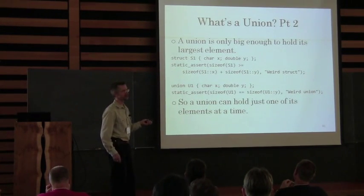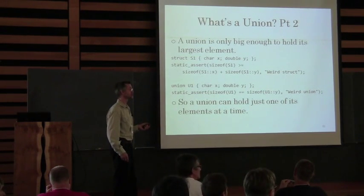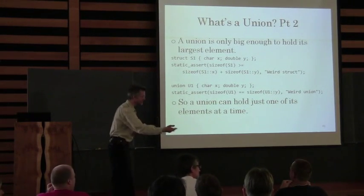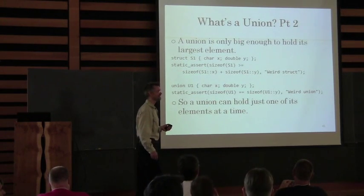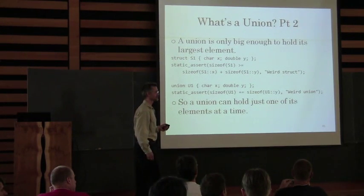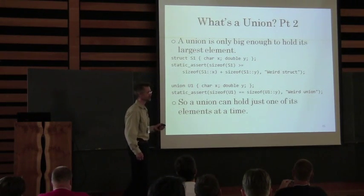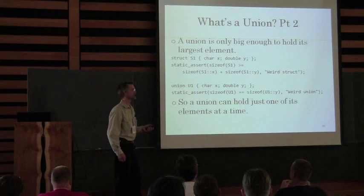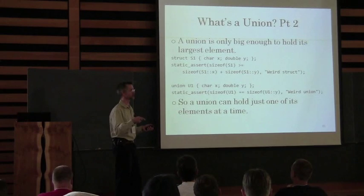If you're trying to save space, people start thinking about unions. A union can hold one of its elements at a time — whatever you put in last is what's really there. The compiler knows about initializer lists even if you don't include the header file, but it requires the header file to actually do the work.